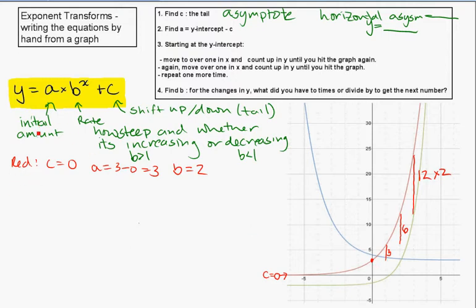So to write our equation, we're literally just going to substitute in the A, the B, and the C that we've found. So Y is going to be equal to A, which is 3, times B, which is 2, to the power of X, and plus 0. Now you don't actually have to write the plus 0, but I just wanted to show that the C is 0. You can actually leave that off if you want.